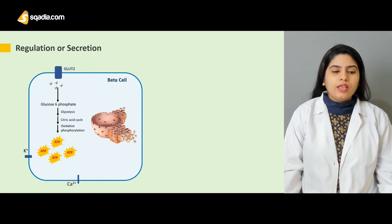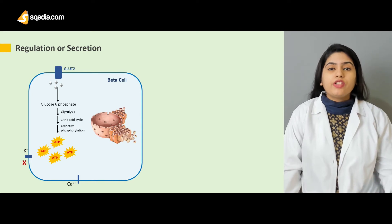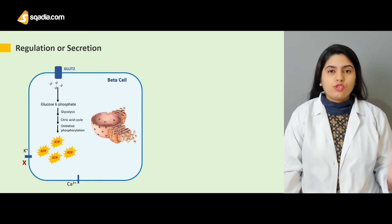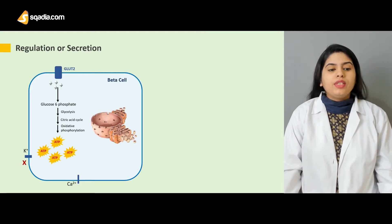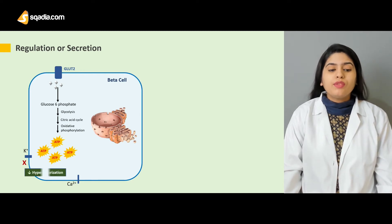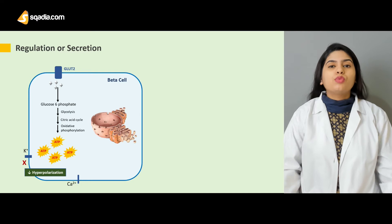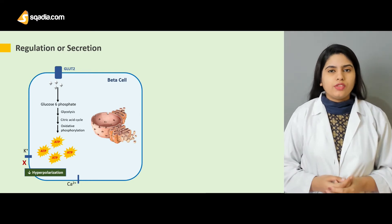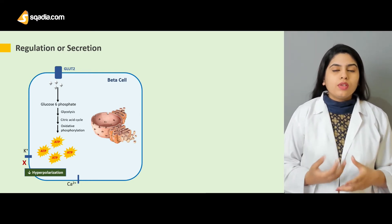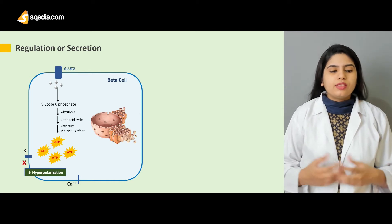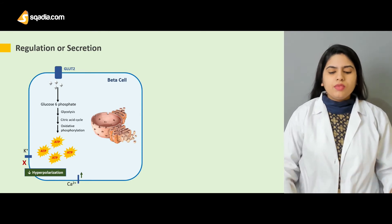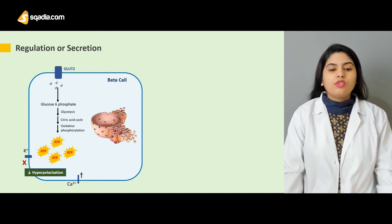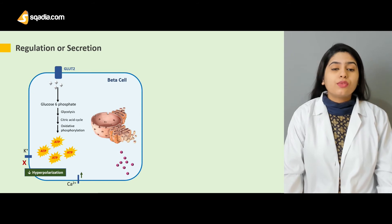When the level of ATP is high inside the cell, the potassium efflux is stopped — potassium cannot move out from the beta cells. When this efflux is decreased, hyperpolarization is decreased, and as a result calcium will move inside the cells.